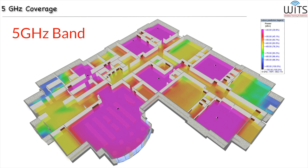We can tell by looking at the legend here that maybe half or more of the floor is down into the -65 dBm range. But that's still good. It doesn't look as good visually, but actually it is — it's just fine. -65 dBm, depending on your design requirements, is probably sufficient. What I want you to take from this is the key insight about band behavior.